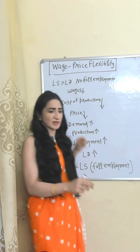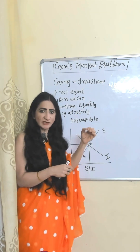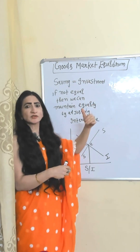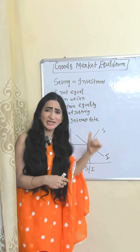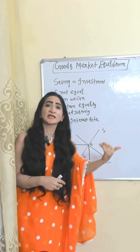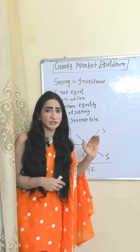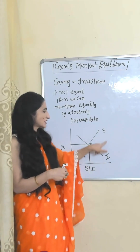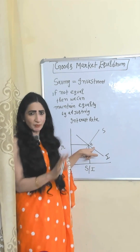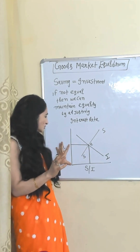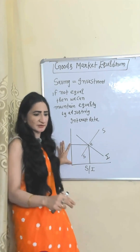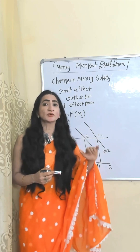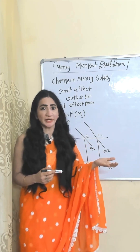The goods market is in equilibrium when saving is equal to investment. If saving is not equal to investment, we can maintain equality by adjusting the interest rate, because the interest rate is flexible. On the saving-investment graph, the equilibrium interest rate is where both saving and investment are equal to each other.